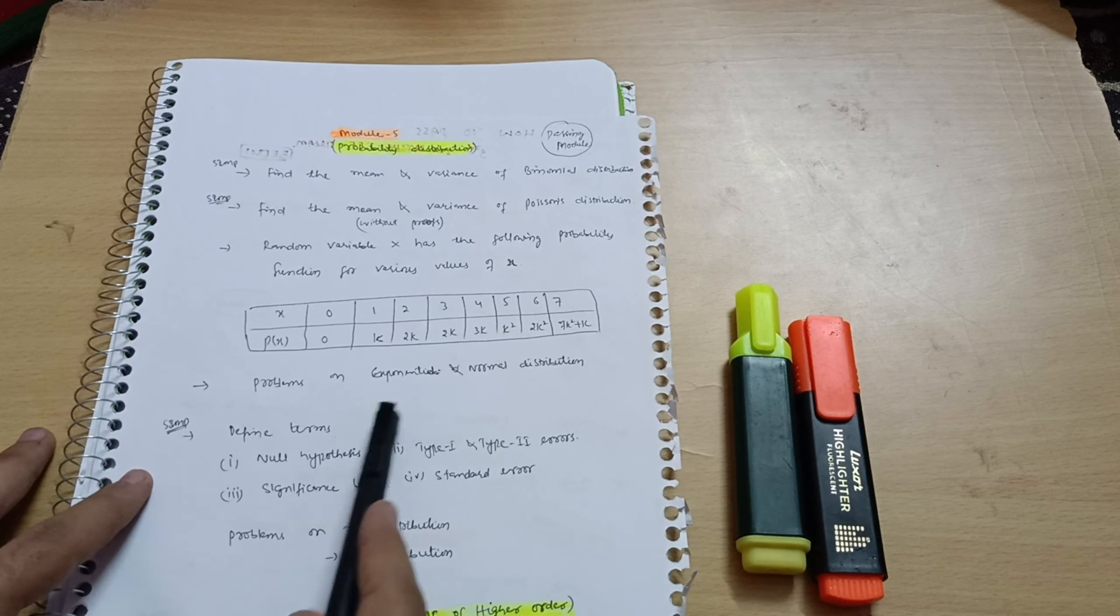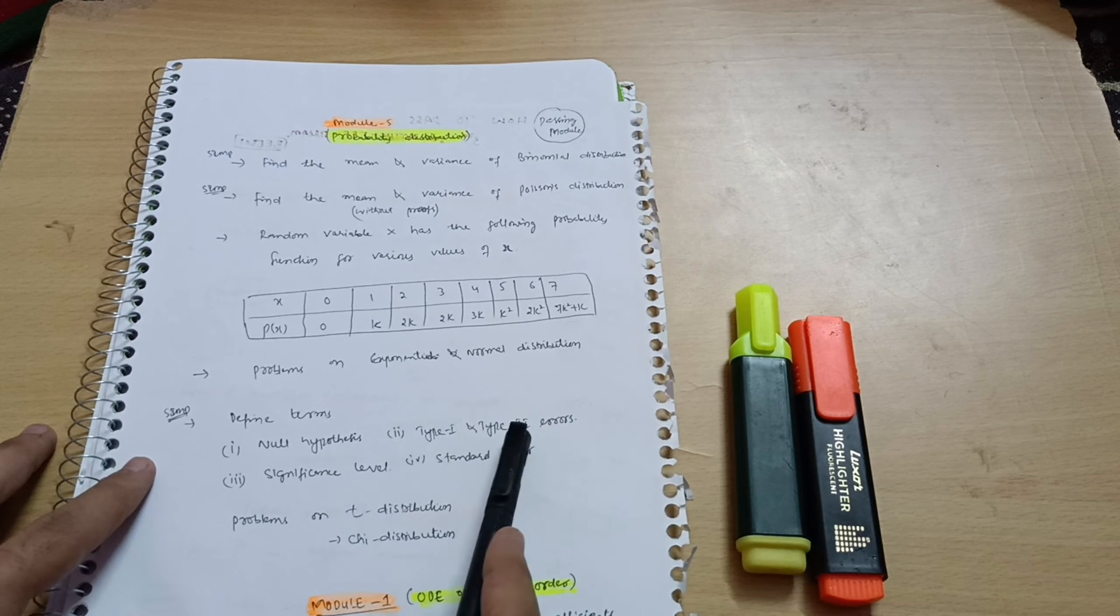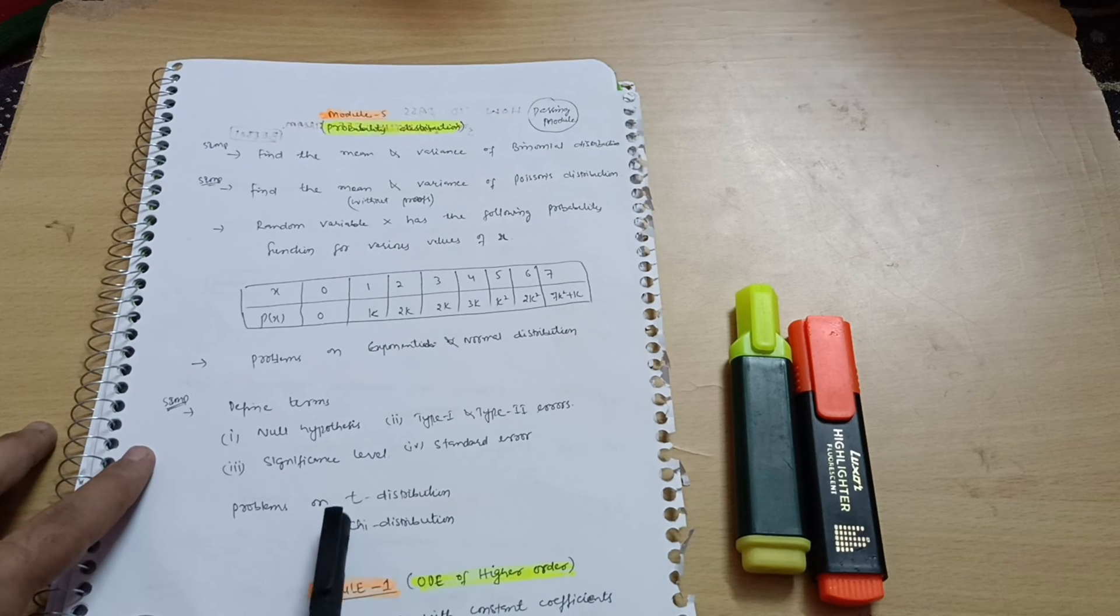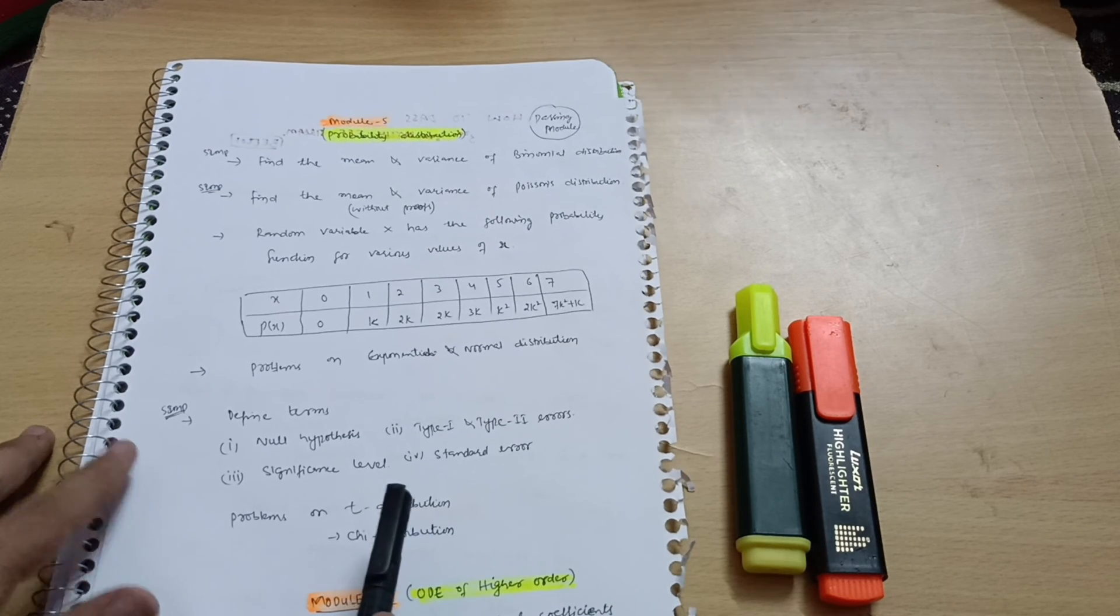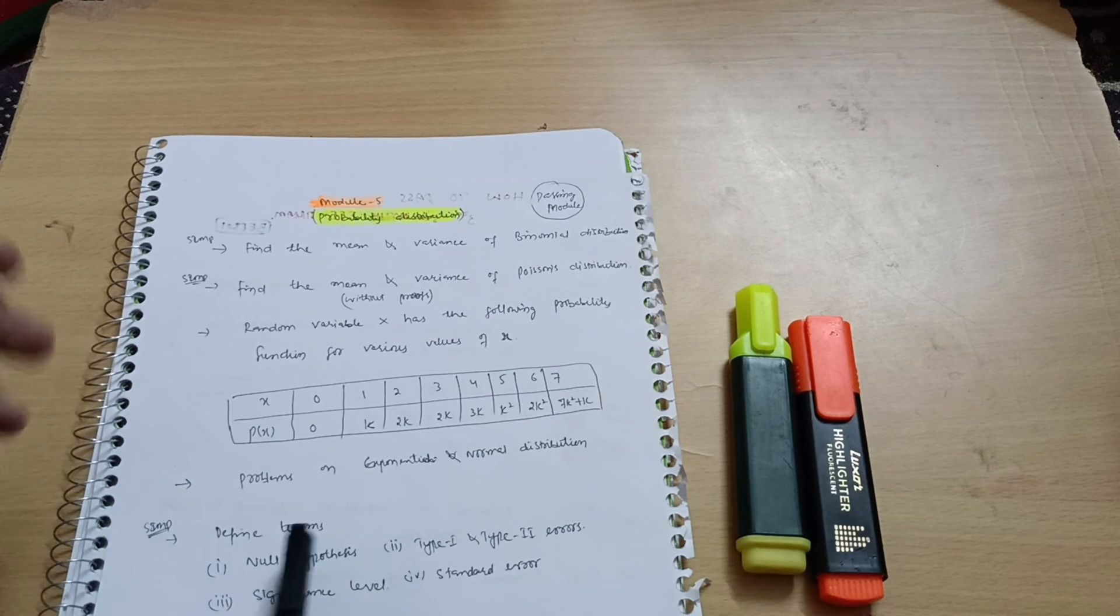Next part, in the OR part, will be defined terms like null hypothesis, type 1 and type 2 errors, significance level, and standard error. And the problems on t-distribution or chi-distribution. I will just prefer you go through the first part. It is the simpler one. But if you are convenient with the second part, there are some theoretical concepts. If you are able to remember, then go for the second part over here.